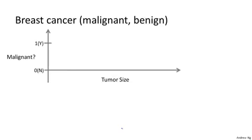Here's another supervised learning example. Let's look at medical records and try to predict if a breast cancer is malignant or benign. If someone discovers a breast tumor — a lump in their breast — a malignant tumor is one that is harmful and dangerous, and a benign tumor is one that's harmless. Let's collect a dataset where on the horizontal axis we have the size of the tumor, and on the vertical axis I'm going to plot one or zero — yes or no — whether or not these are examples of tumors that are malignant, which is one, or not malignant, or benign.